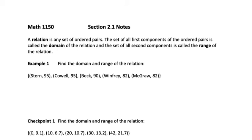In this video for section 2.1, we're going to start with some vocabulary. Our first definition is for a relation. A relation is any set of ordered pairs. They could be words, they could be numbers, it could be a mixture of both, but as long as you have two values and some sort of relationship between them, that's a relation.